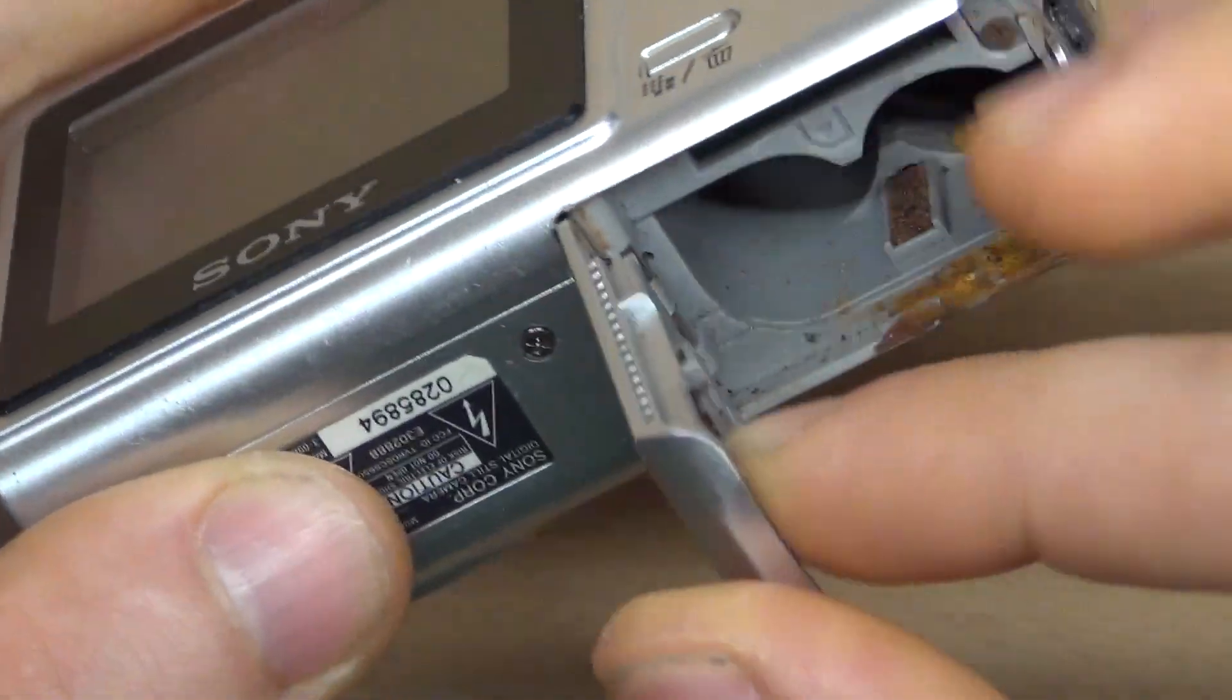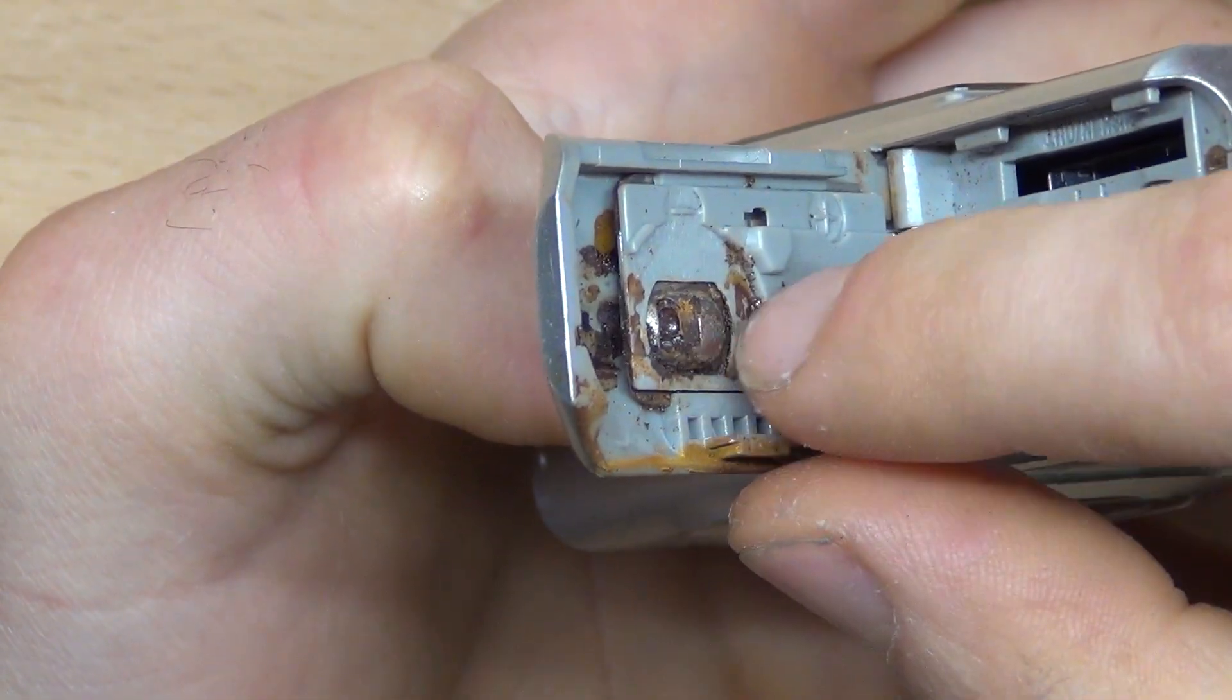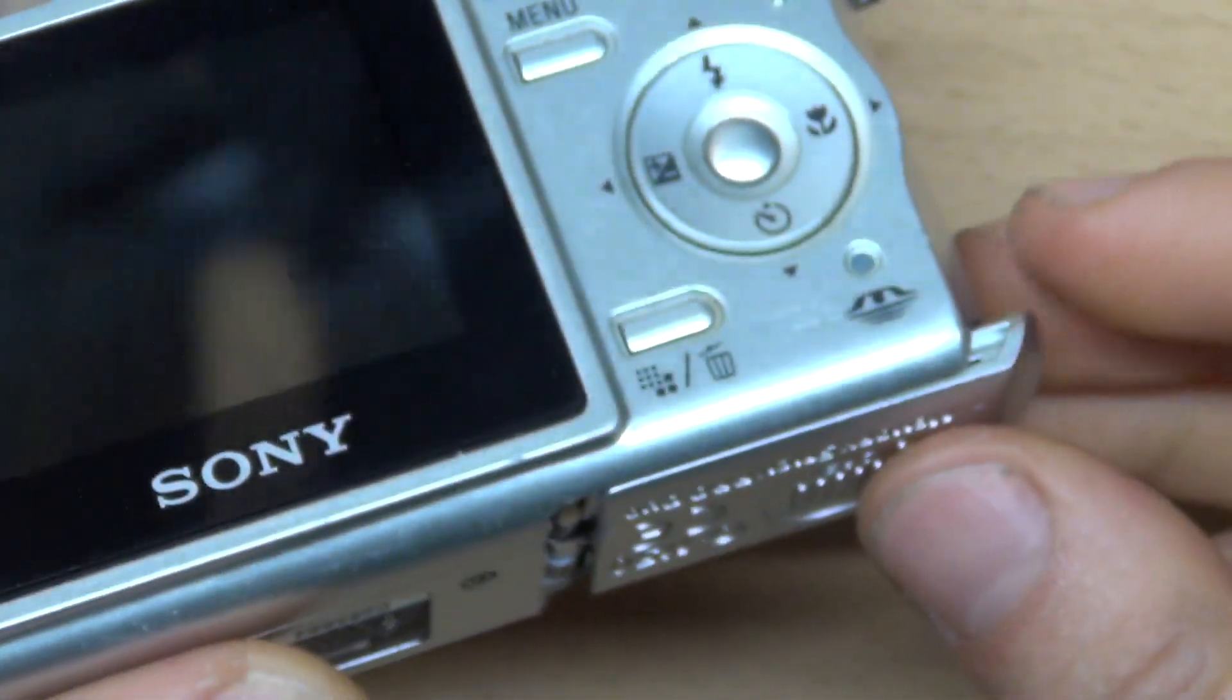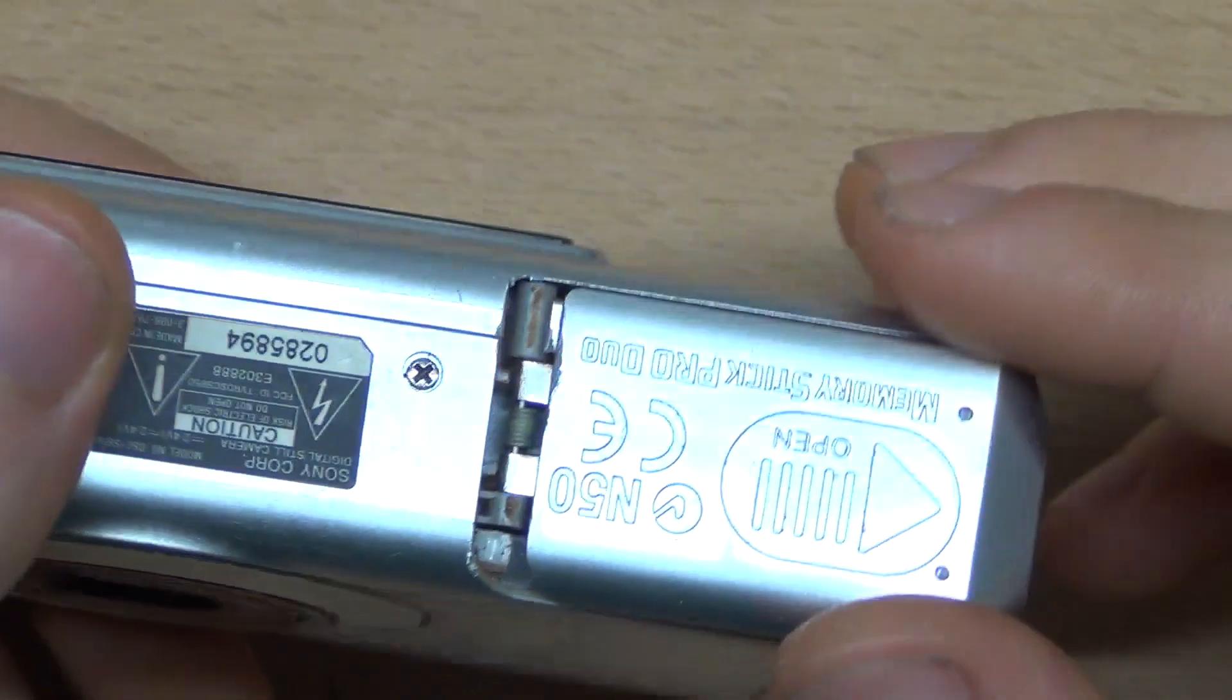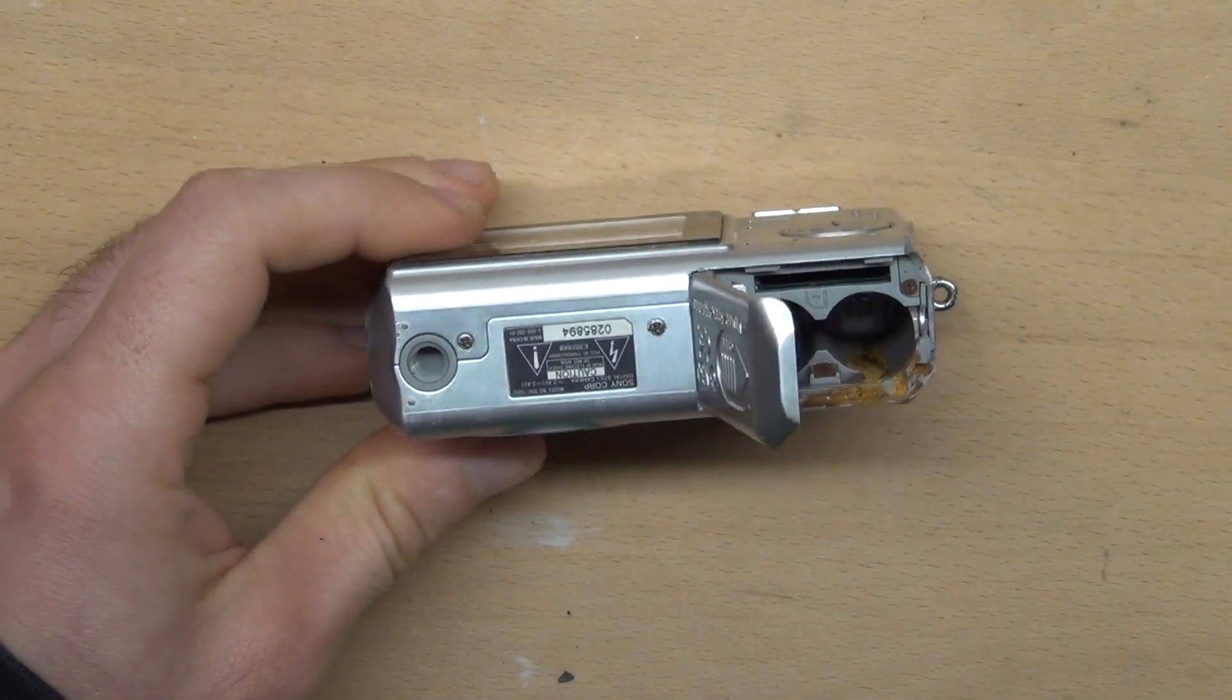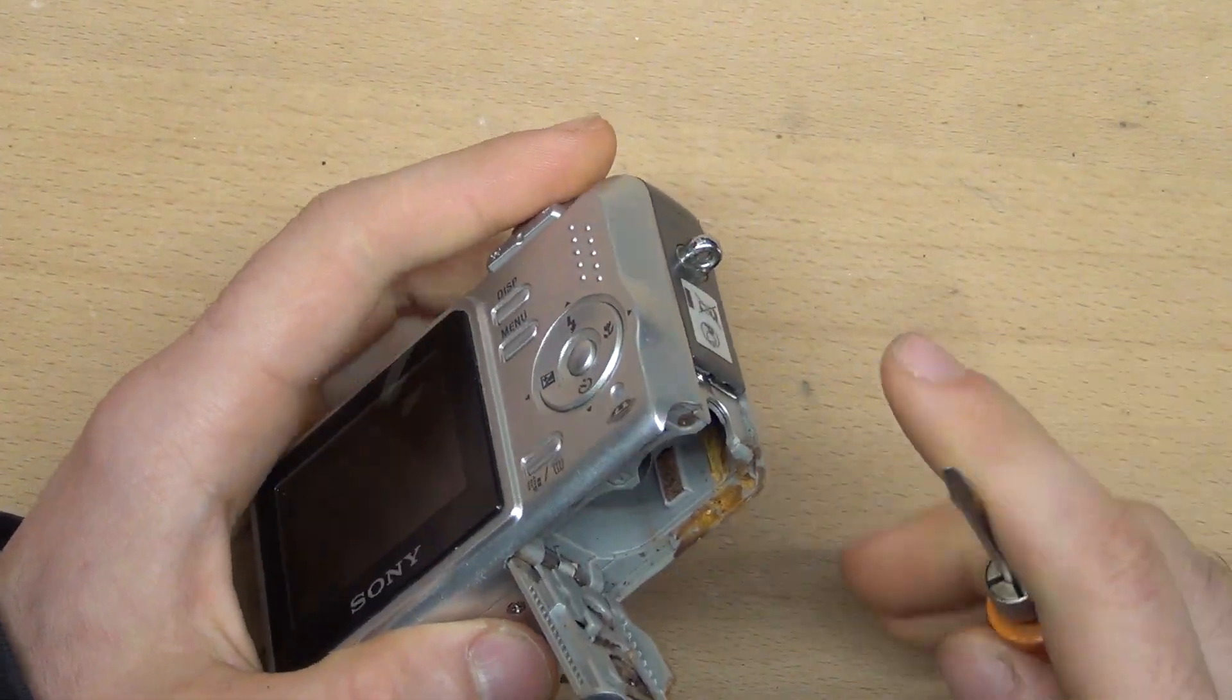The plastic part needs to slide along the metal plate to close properly, but there is a lot of corrosion. I need to remove the entire battery door to clean it, and to do that I will have to disassemble some parts of the camera.